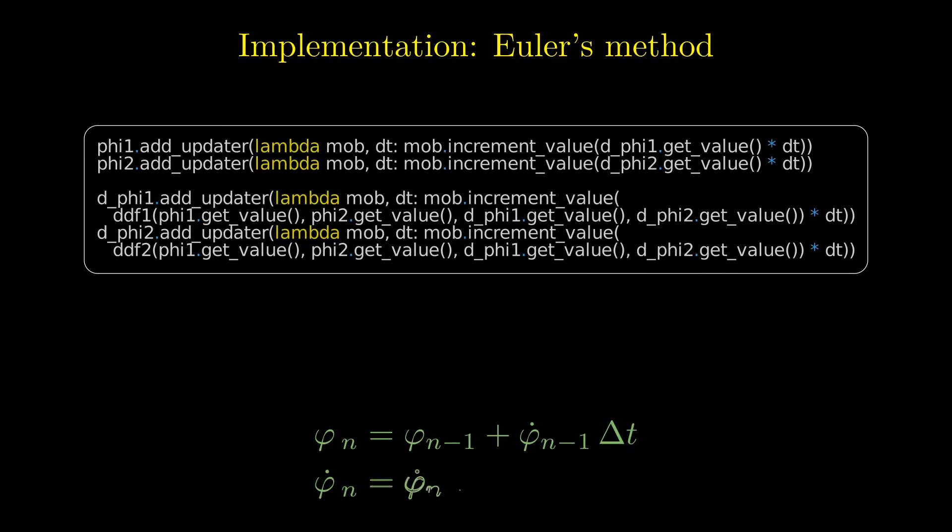In the first line, the new value of phi1 is obtained by adding the term phi1 dot times delta t to the current value of phi1. Similar lines are written down for phi2 and the angular velocities. Also here, the correspondence to the expressions below is hopefully obvious.